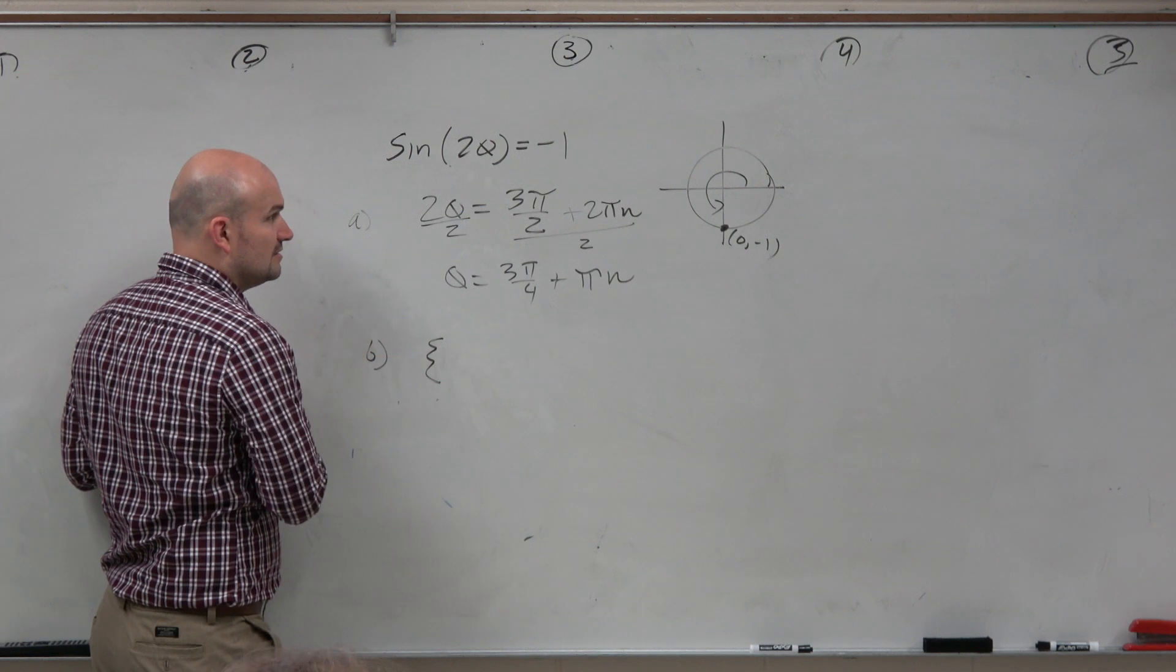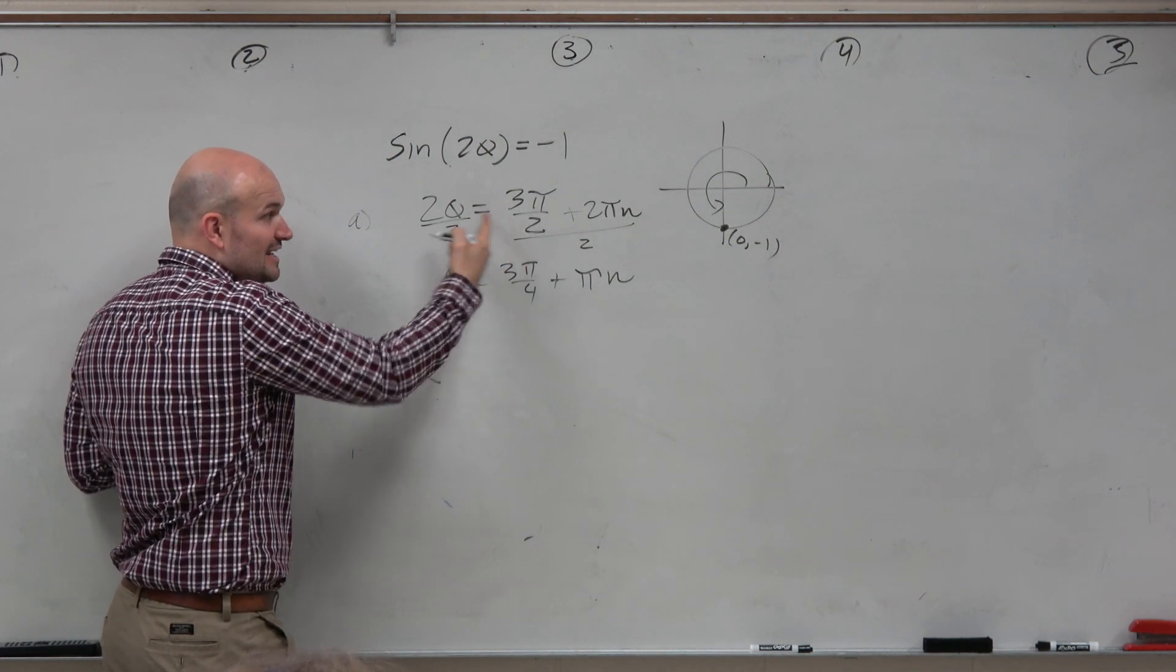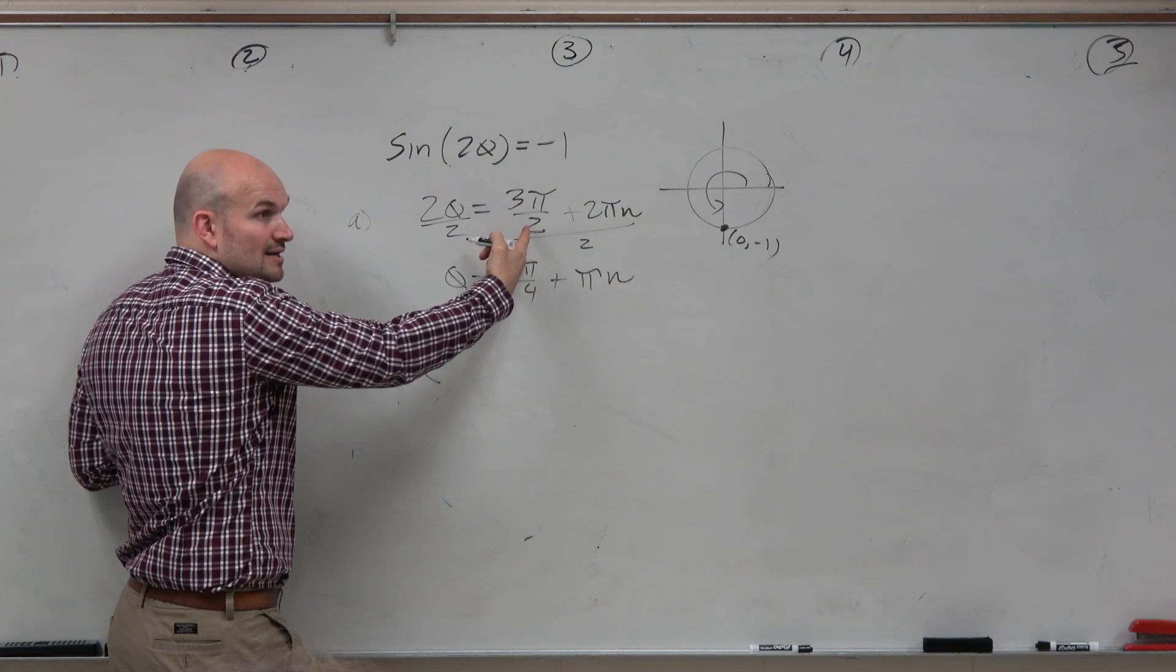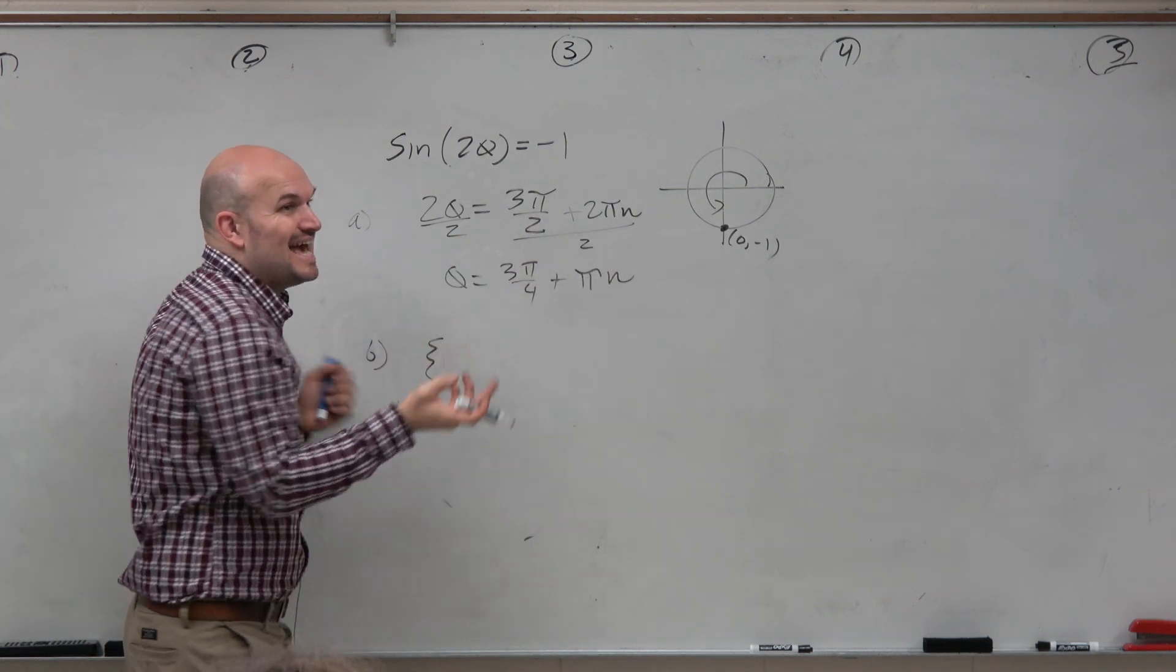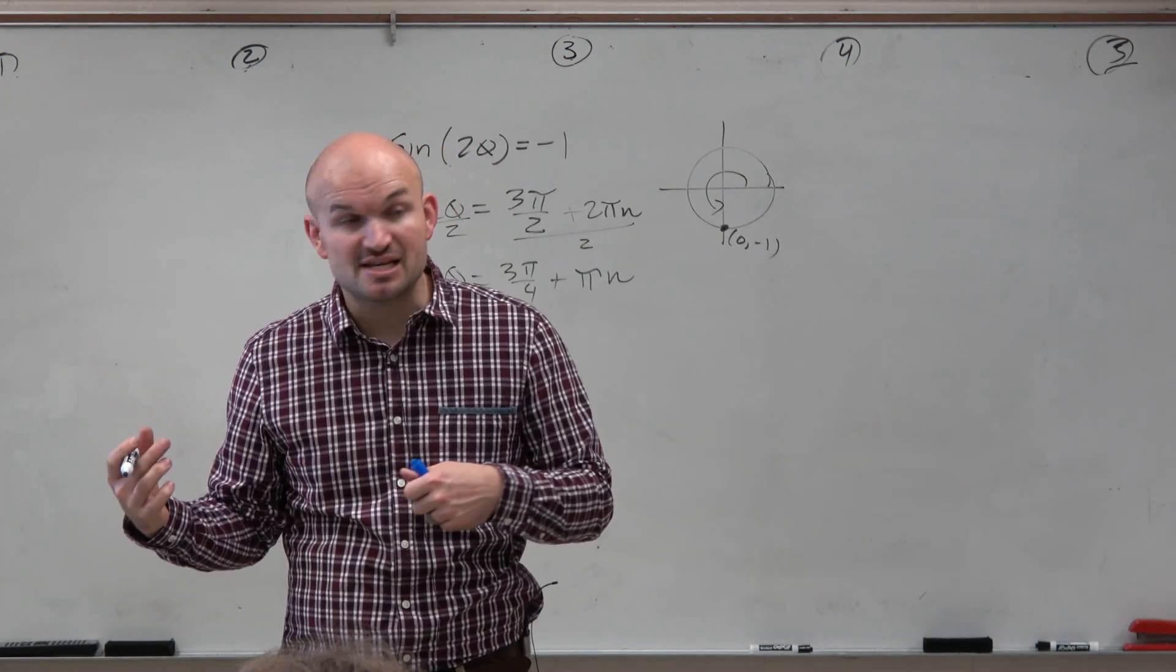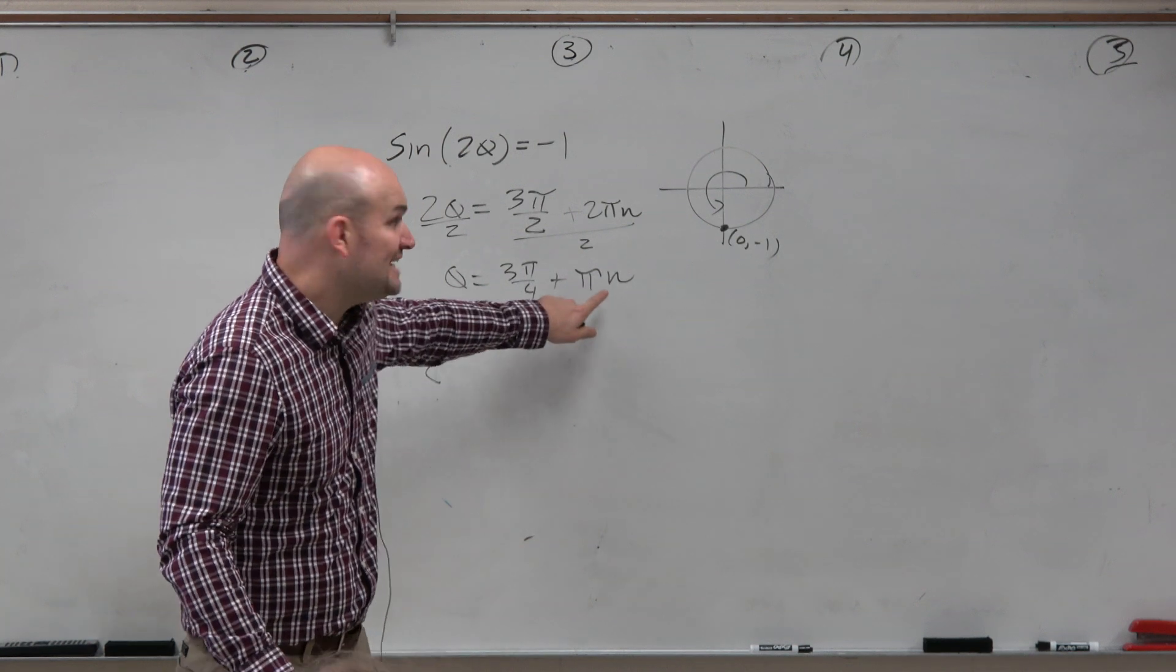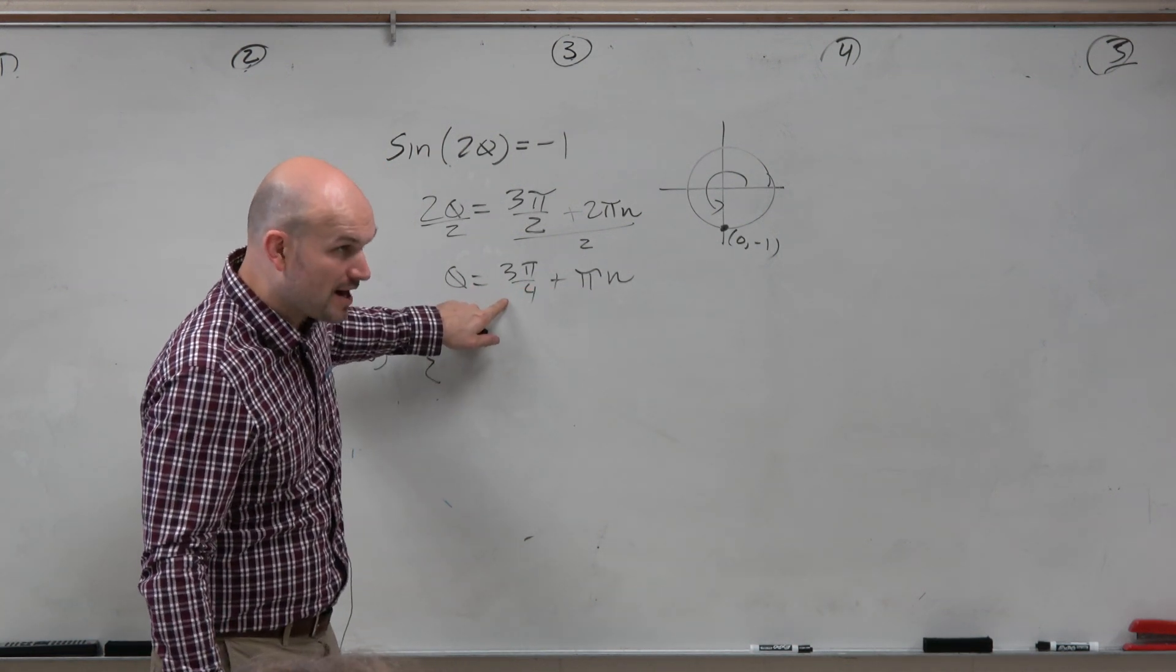So the first solution is, again, our solution is not actually 3 pi halves. It's 2 theta equals 3 pi halves, right? So our first answer is actually 3 pi over 4. Now, remember, n represents any integer. So n could be negative, n could be positive, or n could be 0. So when n is 0, our first solution is 3 pi over 4.